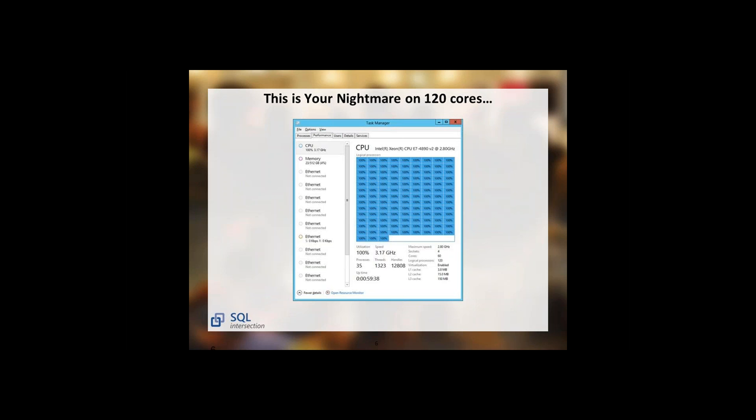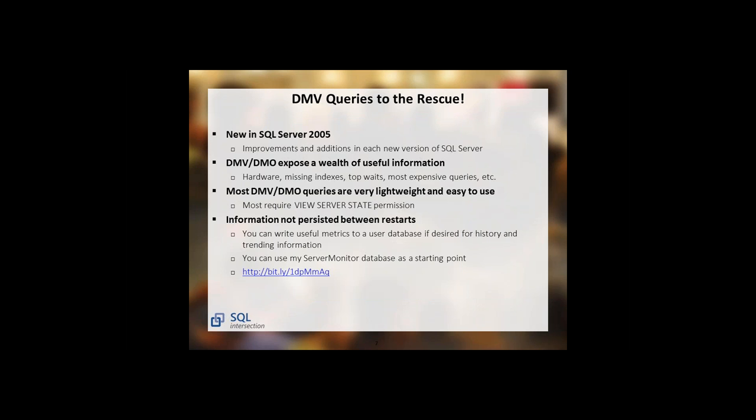Here's another one on an even bigger box — a 120-core machine pegged at 100%. By showing you these queries, I'm hoping you'll be able to figure out what's going on and not see this as often, hopefully never. I started doing this stuff a few years ago, and this became possible when SQL Server 2005 came out because they introduced DMV queries to the product. Each new version of SQL Server adds new DMV queries and new columns to existing ones.